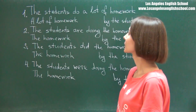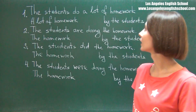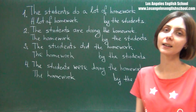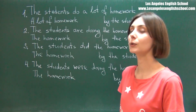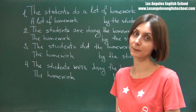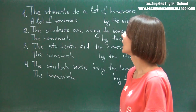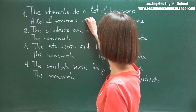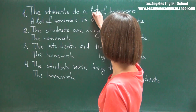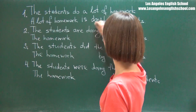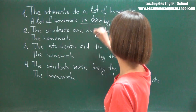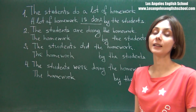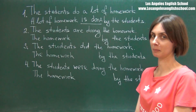The students do a lot of homework. This is the active voice. In order to make it passive, you just need to say: a lot of homework is done by the students. 'Is done' is passive present simple.